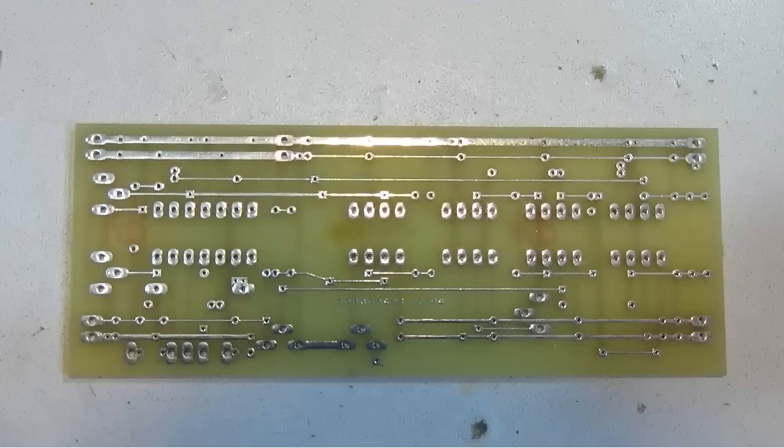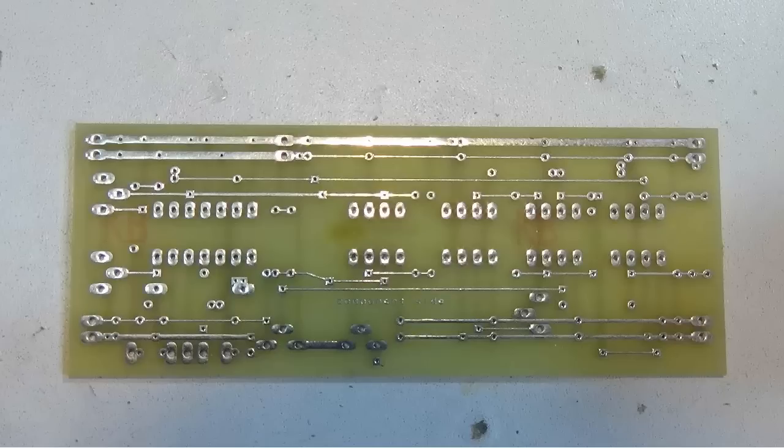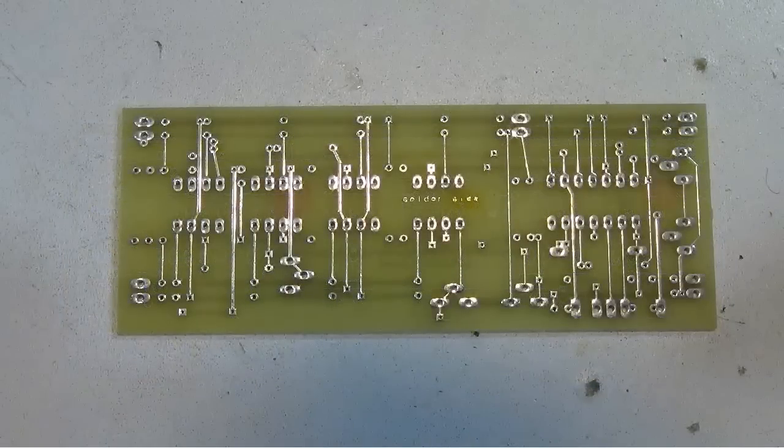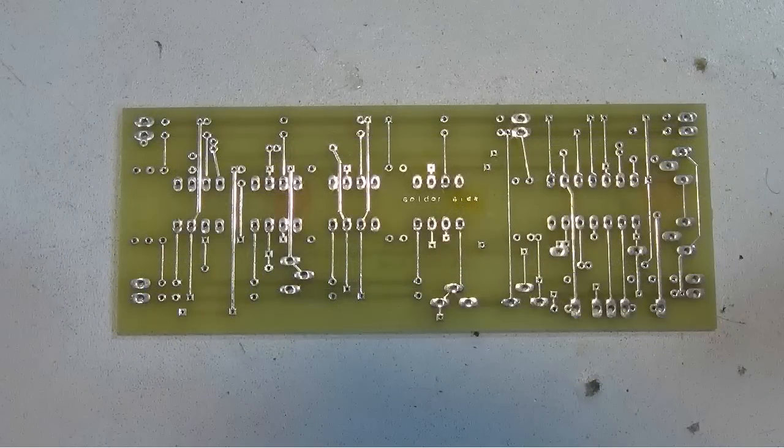This is the practice soldering board that I will use for this demonstration. It is a double sided printed circuit board, which means we have component tracks on both the component side and the solder side. This view shows the component side. Flipping the board over, this is the view of the solder side. This is the side we will do all our soldering on.